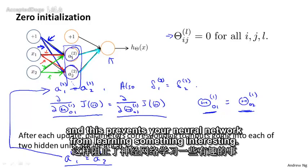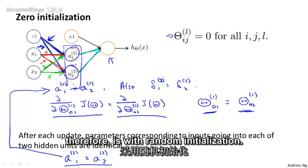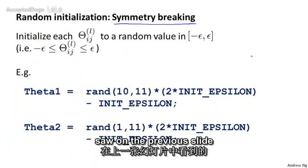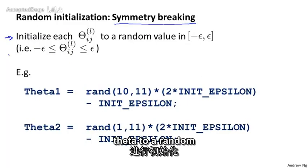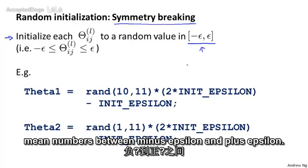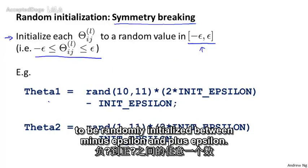This prevents your neural network from learning something interesting. In order to get around this problem, the way we initialize the parameters of a neural network is with random initialization. The problem we saw is sometimes called the problem of symmetric weights — that is, of the weights all being the same — and random initialization is how we perform symmetry breaking. What we do is initialize each value of theta to a random number between minus epsilon and plus epsilon.